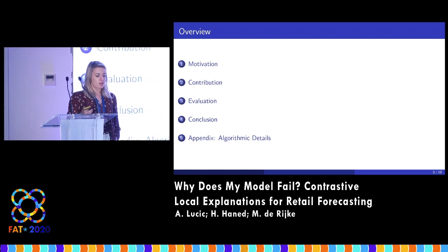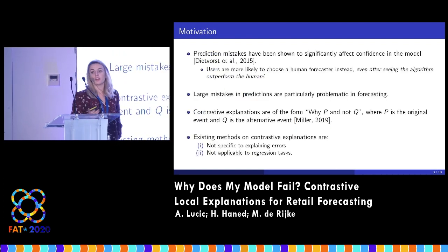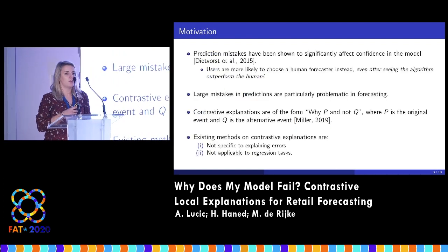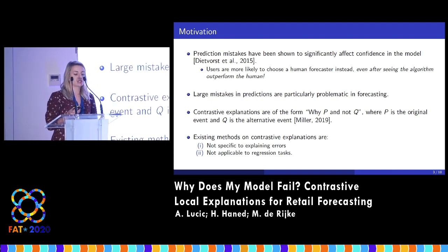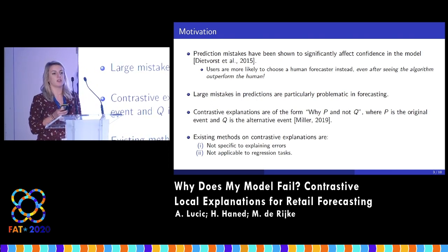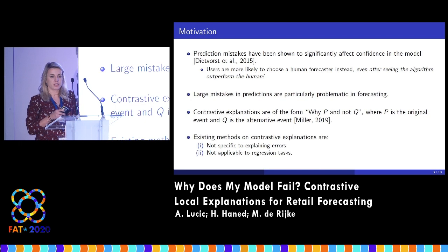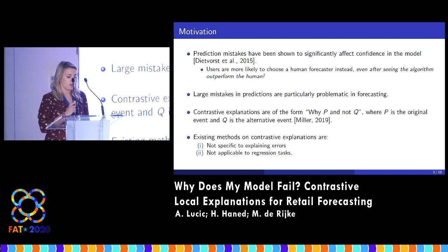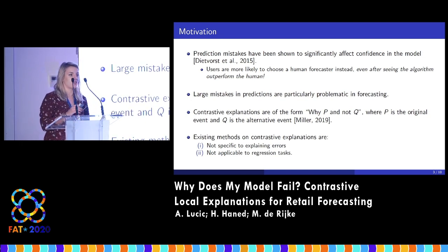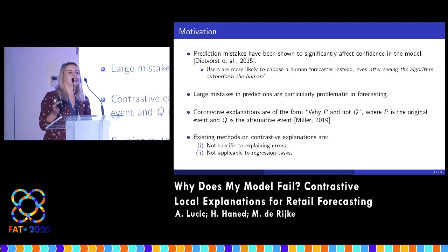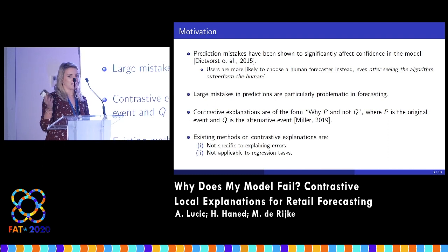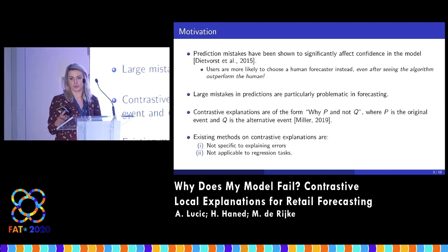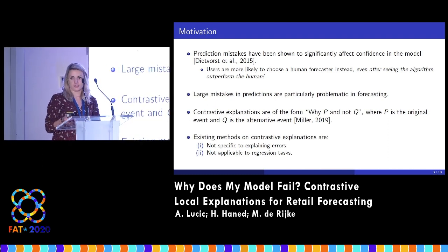This is an overview of the talk. The motivation for this task was that prediction mistakes have been shown to significantly affect users' confidence in the model. In particular, large mistakes in forecasting are really problematic because when the target you're trying to predict is of order 10 to the 6 or 10 to the 7, even a 1 or 2% error can be hundreds of thousands of dollars or euros.